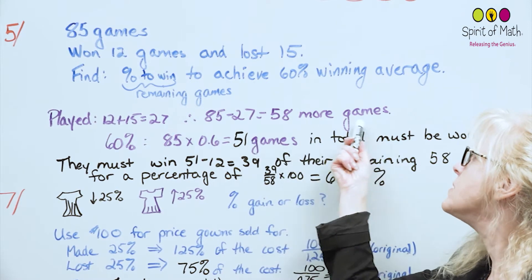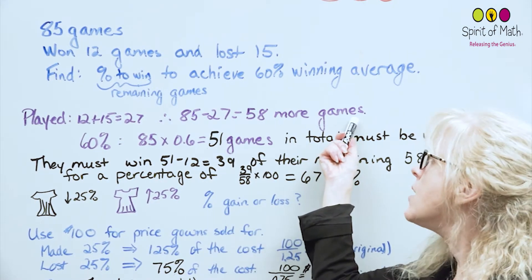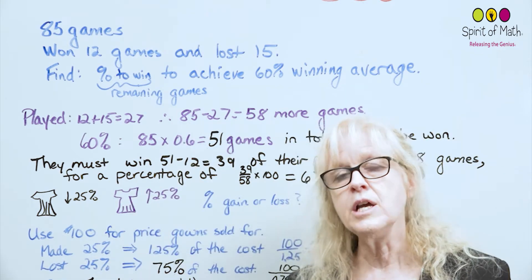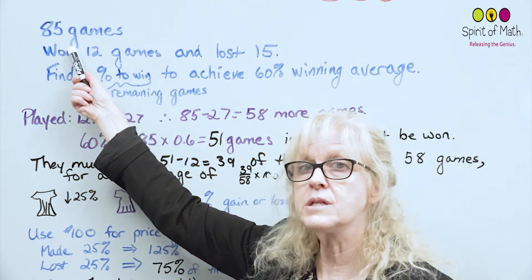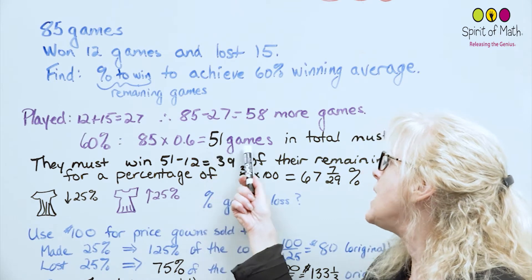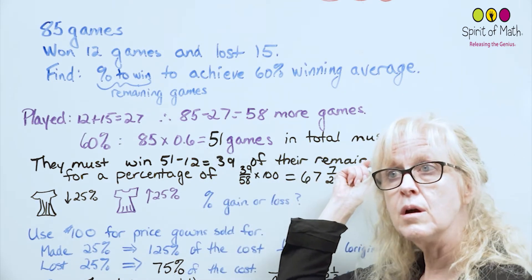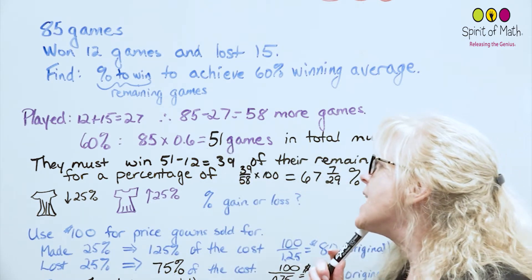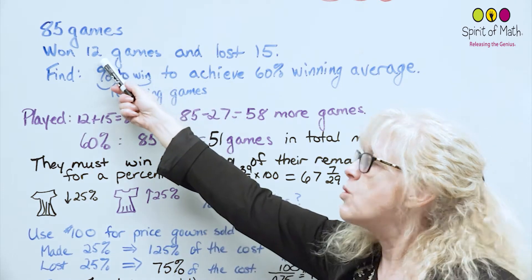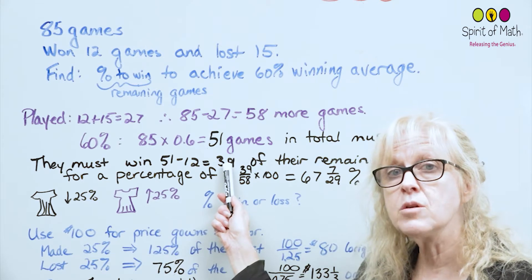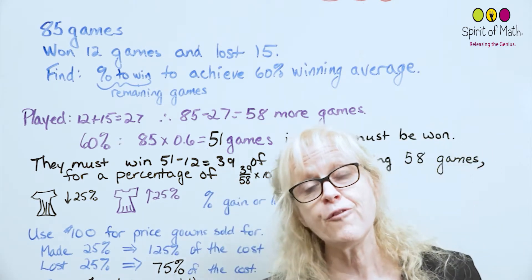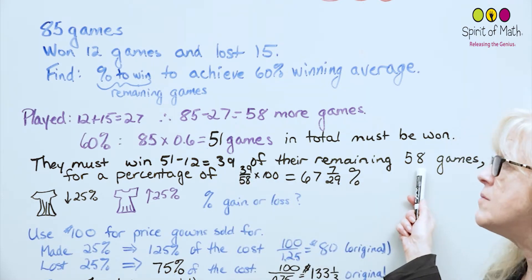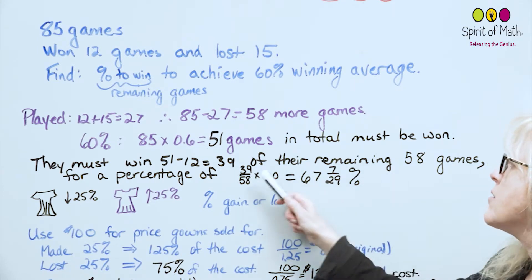So they only have 58 more games for the entire year to play. Now, you know that they need 60% for the entire year. So 60% of 85 is what you have to get. They need to win 51 games in total. So if 51 games in total must be won, they've already won 12 games, so we take away the 12 from the 51. All they have remaining that they have to win going forward is 39. And it's 39 of the remaining 58 games.